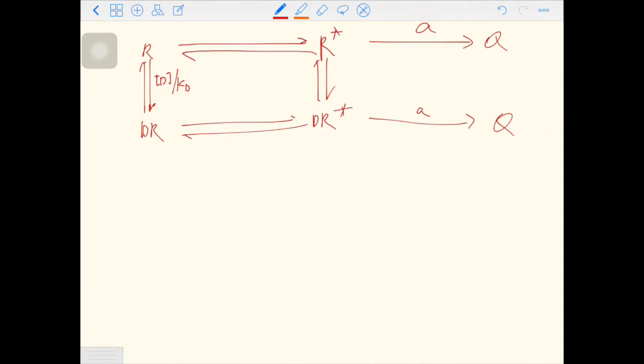Between R and R star, we have a rate constant called KR on top of the arrows. On the bottom, we have alpha times KR. This KR is the same as the KR on the top. On the right, we have D over alpha times KD. So what is alpha?